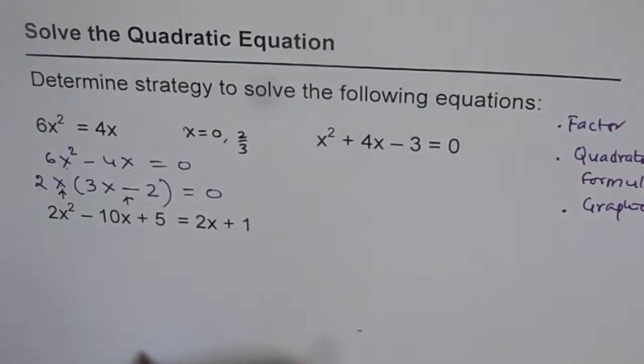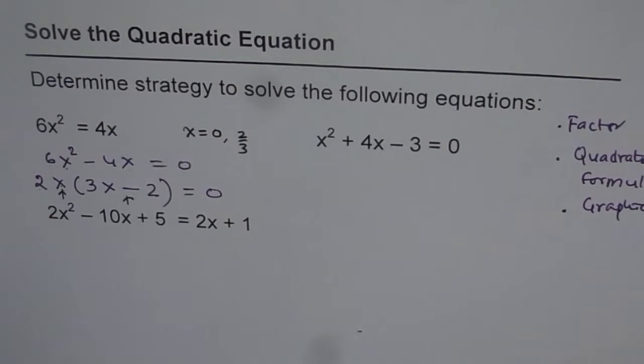So that is our second solution. So we get 2 solutions for this particular quadratic equation. Remember, for a quadratic equation, you can get maximum 2 solutions. And minimum 0.